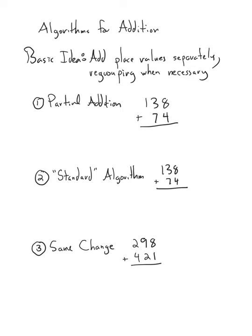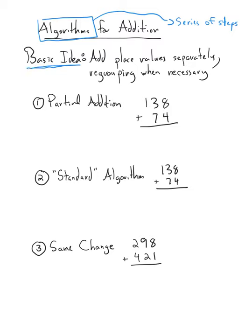Now that we know what addition is, we can talk about how to add. I'm going to show you a few algorithms for adding. Algorithms are just a series of steps that tells you how to do something. The basic idea for all of these is that we're going to add our place values separately, usually from right to left — smallest to largest — and we'll carry when we need to.